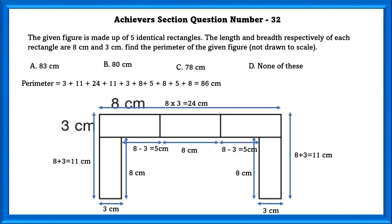Perimeter is equal to all the sides added together, which is equal to 86 cm, and there is no such option as 86 cm, so the answer is D. None of these.